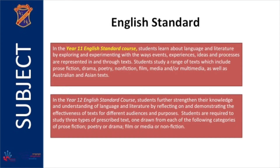In the Year 11 English Standard course, students learn about language and literature by exploring and experimenting with the ways events, experiences, ideas and processes are represented in and through texts. Students study a range of texts which include prose fiction, drama, poetry, non-fiction, film, media and/or multimedia, as well as Australian and Asian texts.